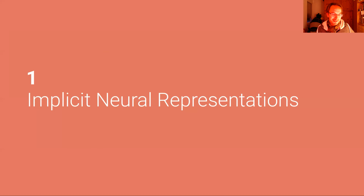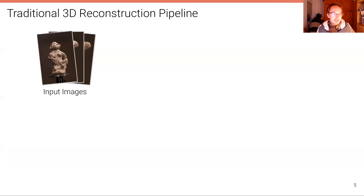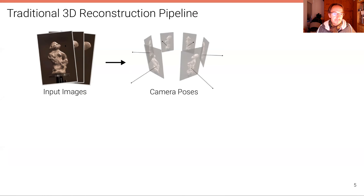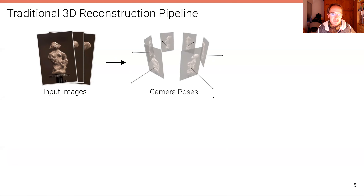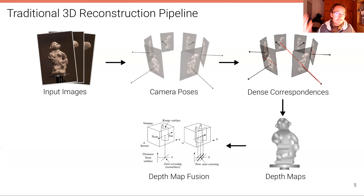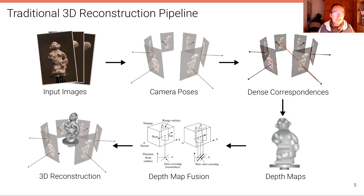So let's start with implicit neural representations. How does a traditional 3D reconstruction pipeline look like? The input to such a 3D reconstruction pipeline is typically a set of images and we want to obtain a 3D model that corresponds to the scene. The first step is to estimate the camera poses, for example using bundle adjustment. Then we find dense correspondences across frames to get depth maps, and then fuse these depth maps into a coherent 3D reconstruction. This is how people have tackled this problem for several decades.